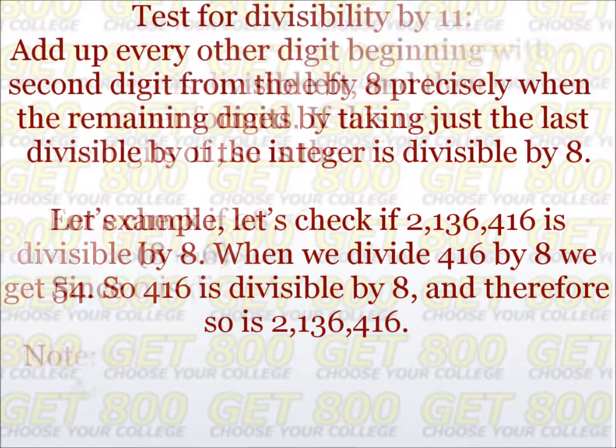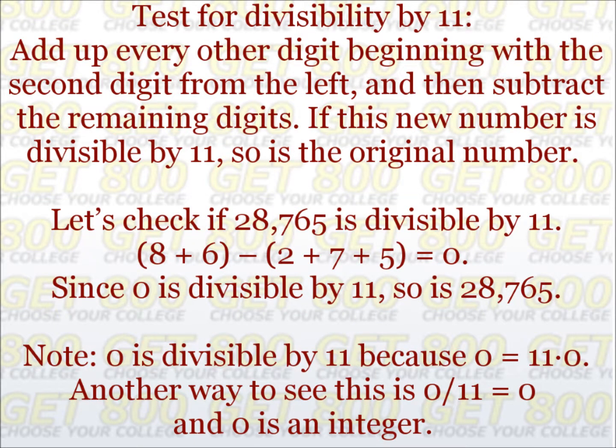What about divisibility by 11? To test for this, we're going to add up every other digit beginning with the second digit from the left, and then subtract off the remaining digits. If this new number is divisible by 11, so is the original number; otherwise, it is not. For example, let's check if 28,765 is divisible by 11. We add up 8 and 6, and subtract off 2, 7, and 5. When we do this, we get 0. Since 0 is divisible by 11, so is the original number, 28,765.